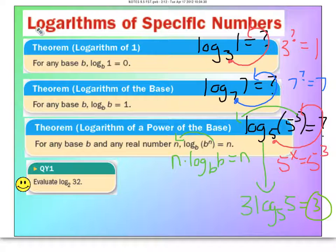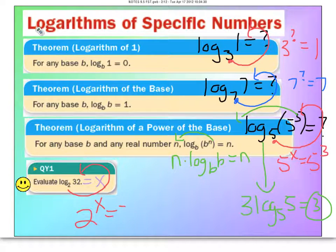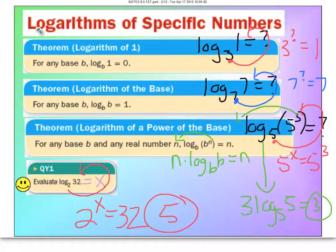Let's evaluate log base 2 of 32. Go back and set it equal to something, then rewrite it as an exponent: 2 to some power equals 32. It's 2 to the 5th power, so the answer is 5. Remember, if you don't see that these properties apply, just revert and write the log as an exponent to see if it helps.